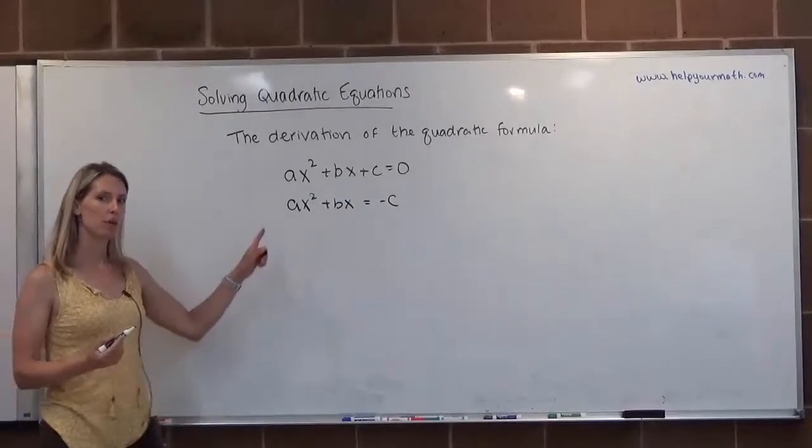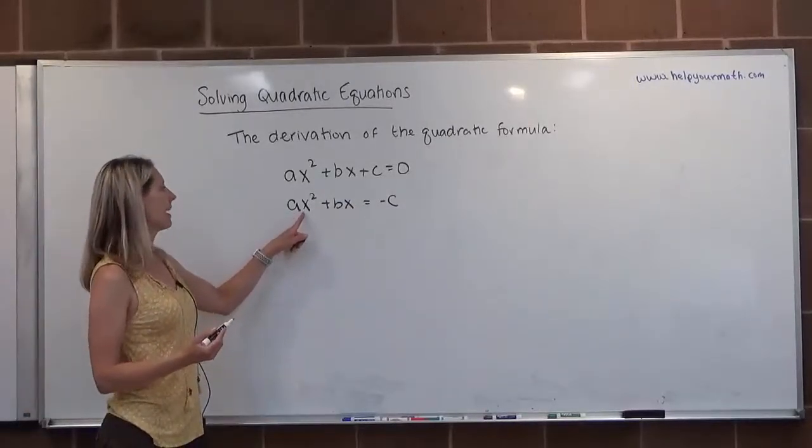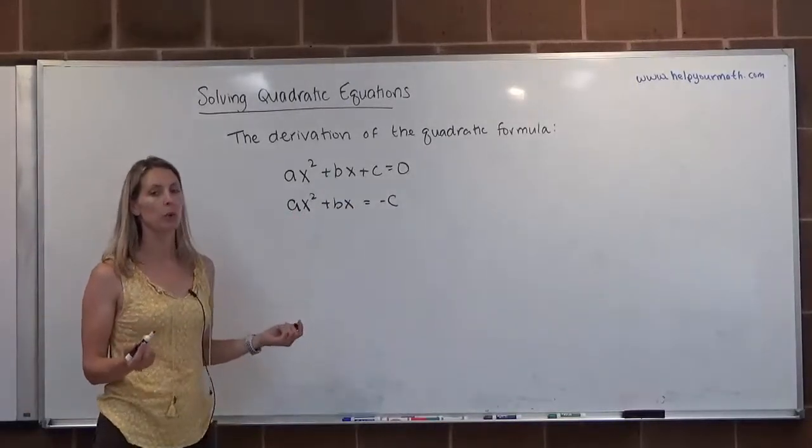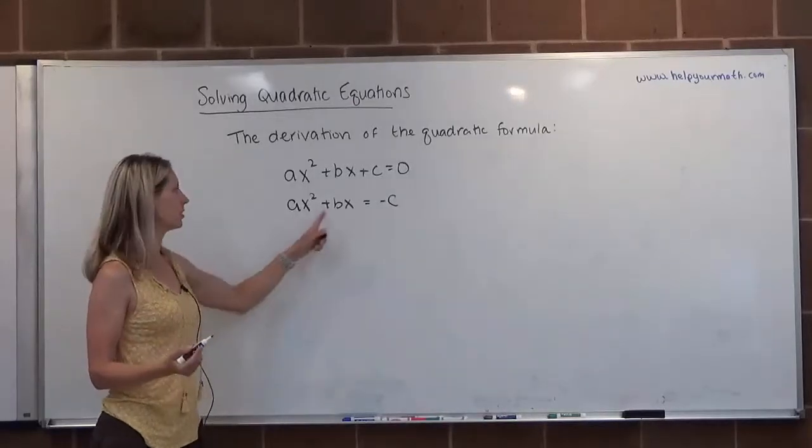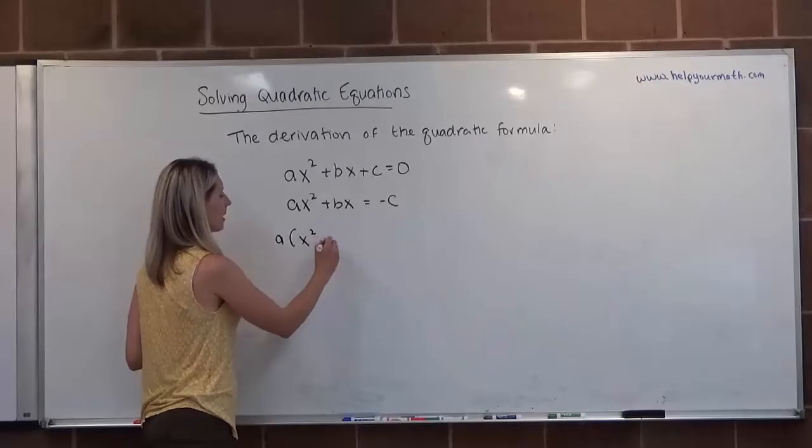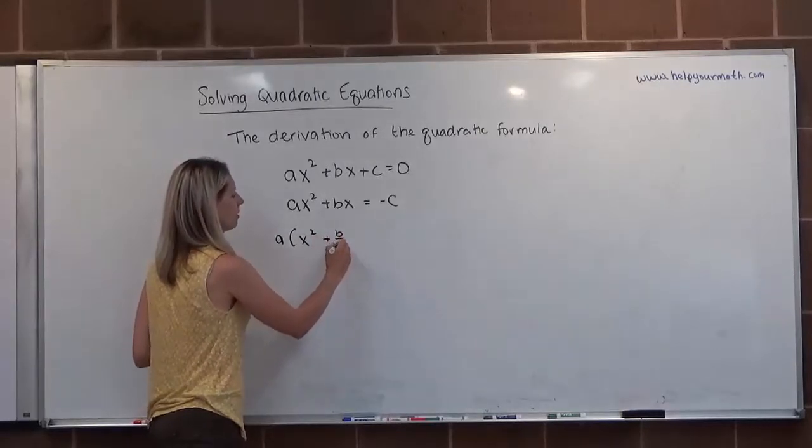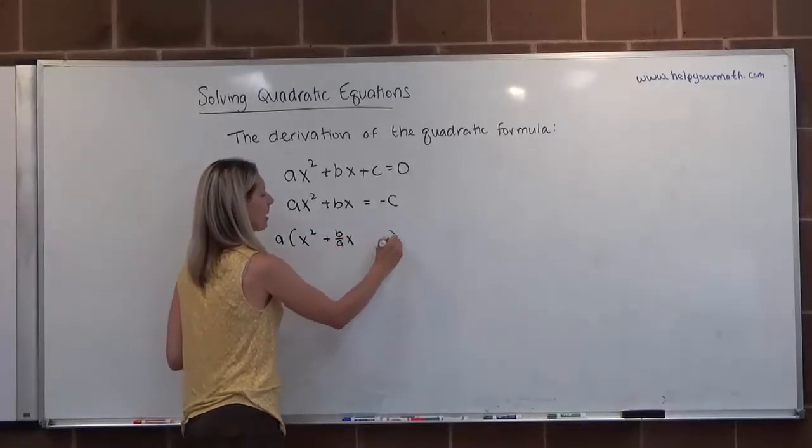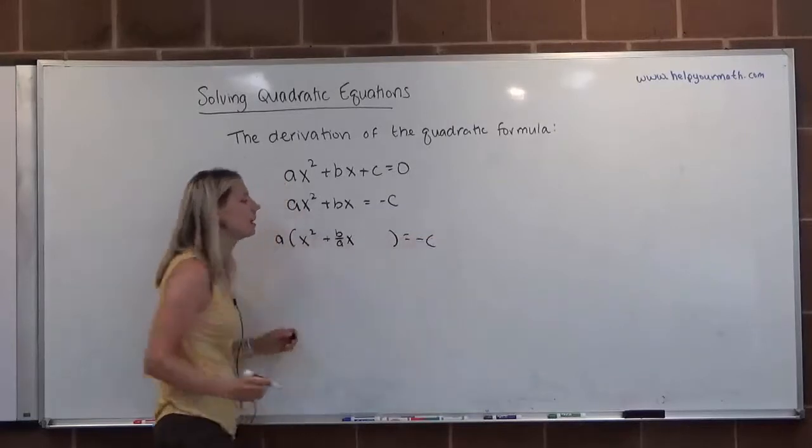That would give me ax squared plus bx equals negative c. The next thing I need to do if I'm going to do completing the square is I can't have a coefficient besides 1, so I need to factor out an a from these two terms. So I'm going to factor out a. That's going to leave me with x squared plus b over ax. I'm going to leave a little gap here since we're about to complete the square, equals negative c.